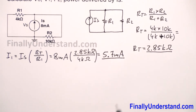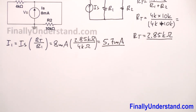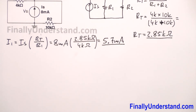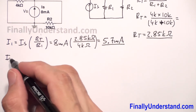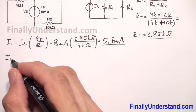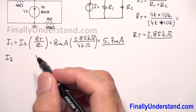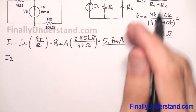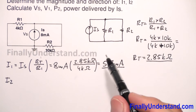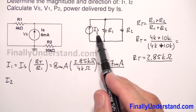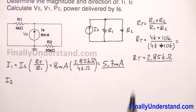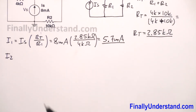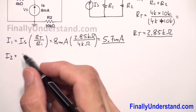Now I am going to find I2. Again, I am going to use the current divider rule. Why? Because I want to practice the current divider rule. I can also use Kirchhoff's current law and simply subtract from IS I1, but let's practice the current divider rule because many students have problems with that.